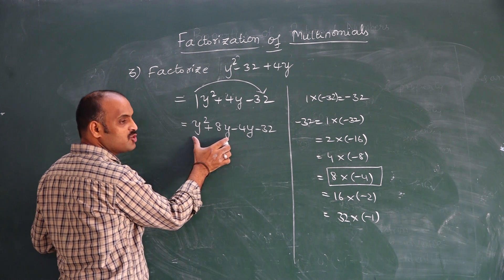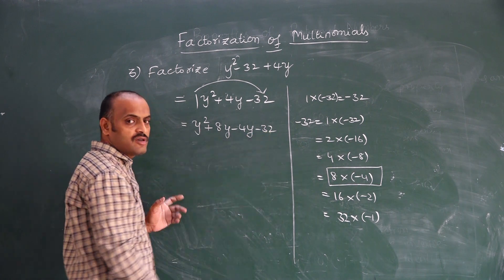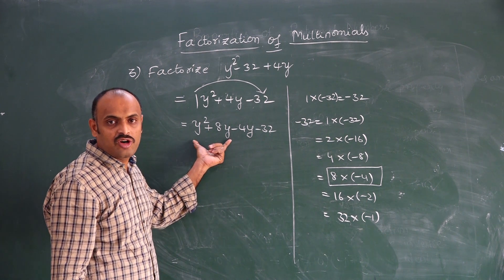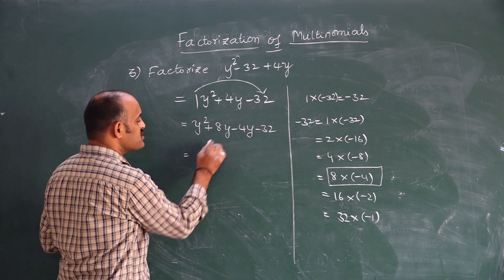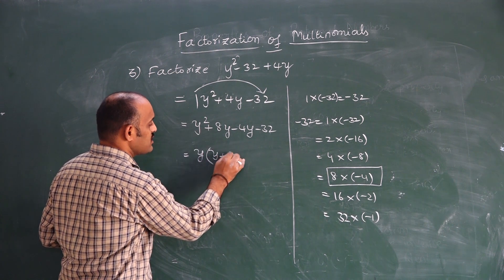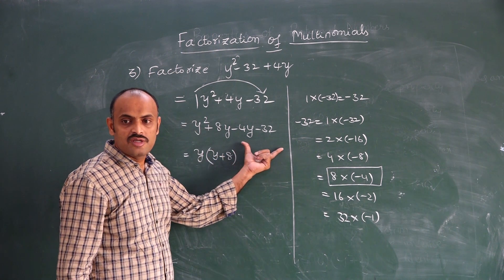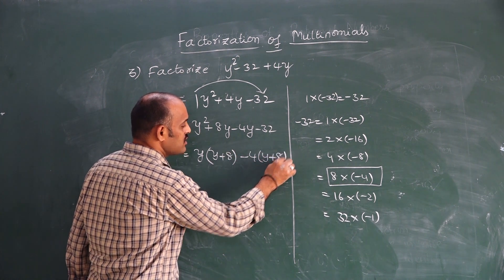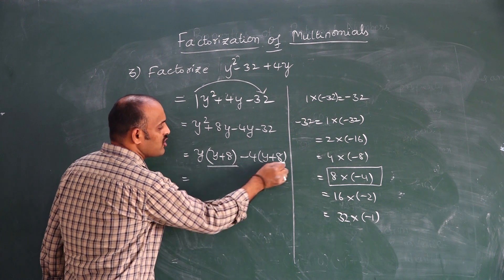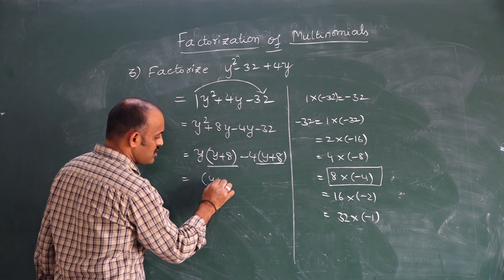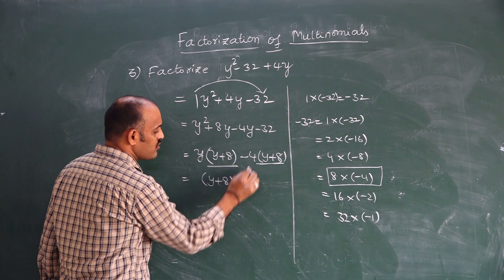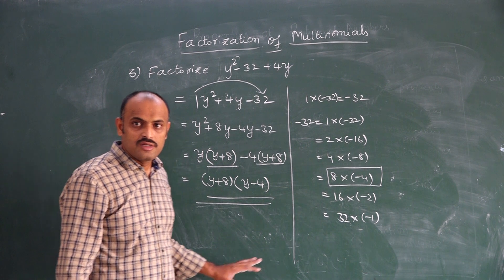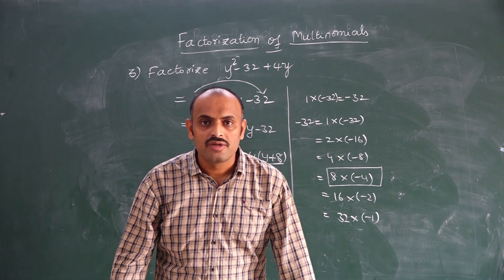So y² + 4y − 32 = y² + 8y − 4y − 32. The first two terms form one group, the last two form another. In the first group, y is common: y(y + 8). In the second group, −4 is common: −4(y + 8). Taking (y + 8) common gives (y + 8)(y − 4). Hope you understand. Thank you and have a nice day.